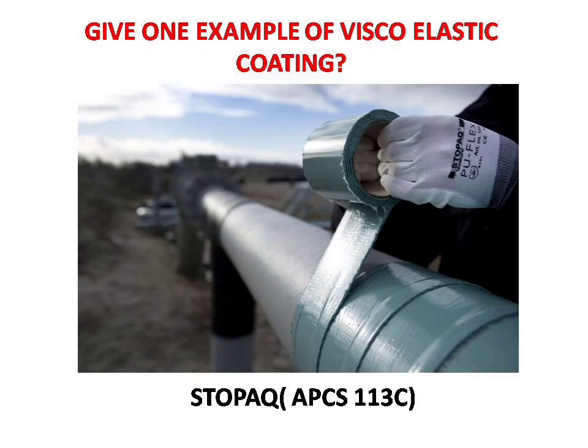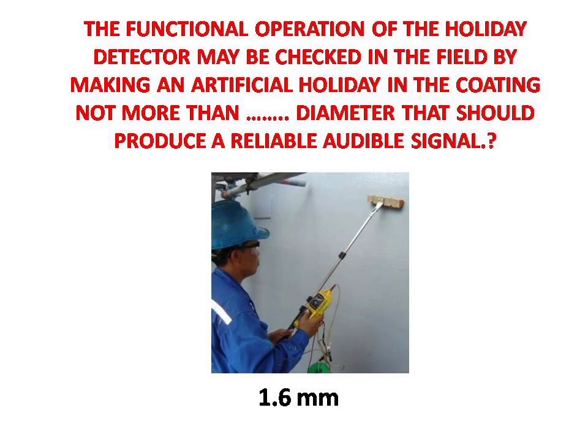Next question: the functional operation of the holiday detector may be checked in the field by making an artificial holiday in the coating. What maximum diameter should produce a reliable audible signal? Answer is: 1.6 millimeters.